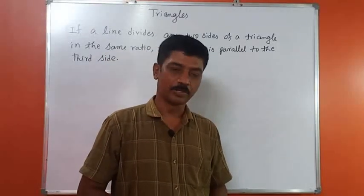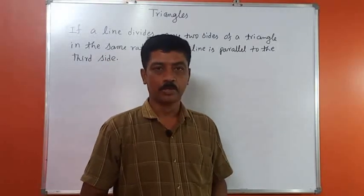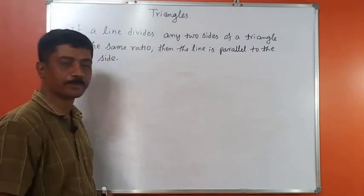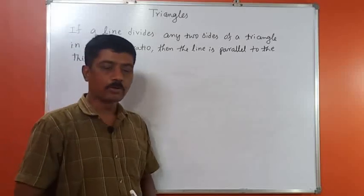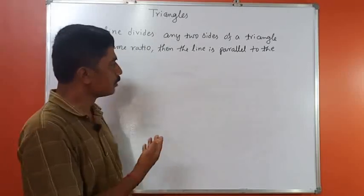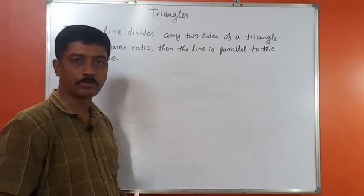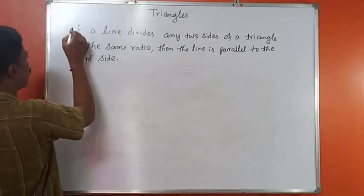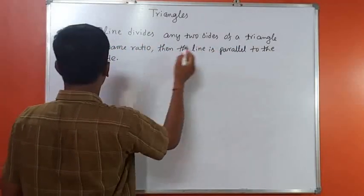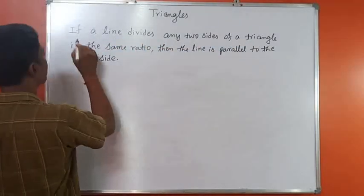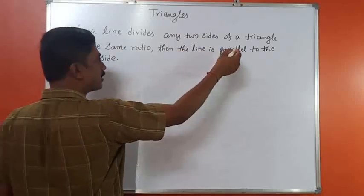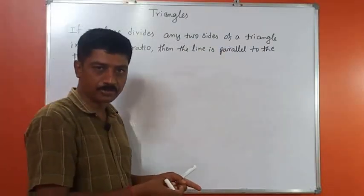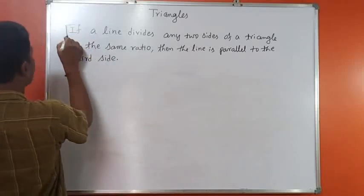Hello children, welcome to Aditya Classes. Today we are going to learn the Converse of the Basic Proportionality Theorem. We already learned the Basic Proportionality Theorem, and this is its converse. What this theorem says: if a line divides any two sides of a triangle in the same ratio, then the line is parallel to the third side.